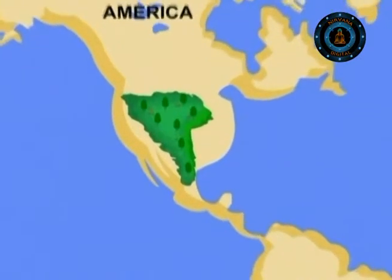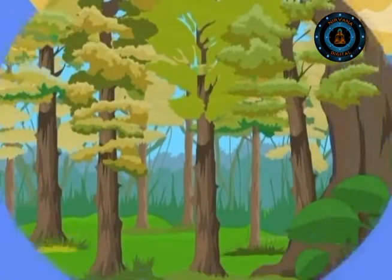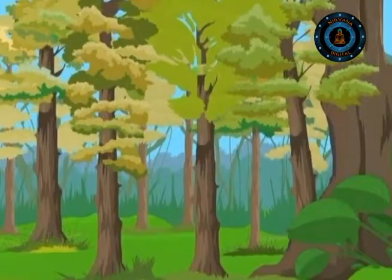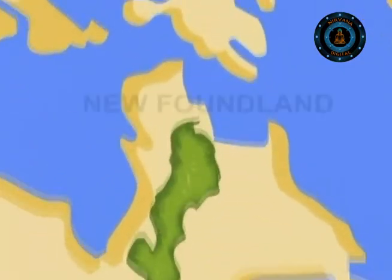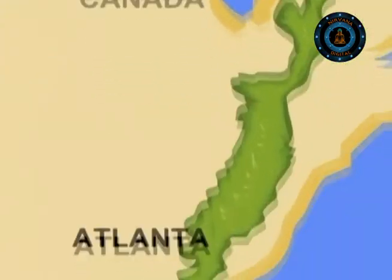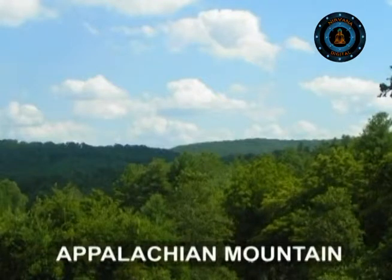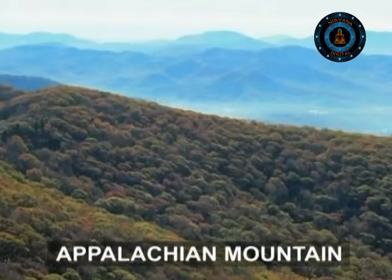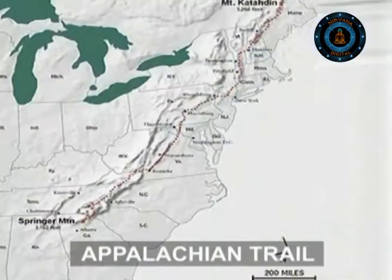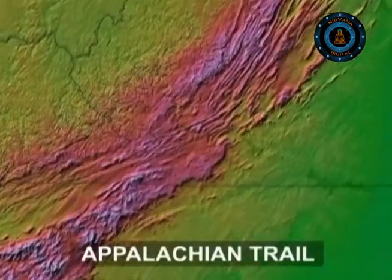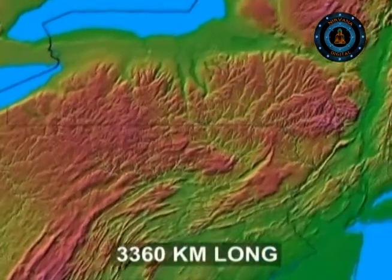Coming towards the North American temperate forests, we find different species of animals and plants which add beauty and richness to the already scenic forest. Most of the eastern USA is covered by the Appalachian Mountains, extending from Newfoundland, Canada south to Atlanta, Georgia. The southern part of this mountain supports more than 130 species of trees and more than 1,500 species of wildflowers. The American temperate forest biome can be experienced closely along the Appalachian Trail, the longest footpath in the world, extending more than 3,360 kilometers.